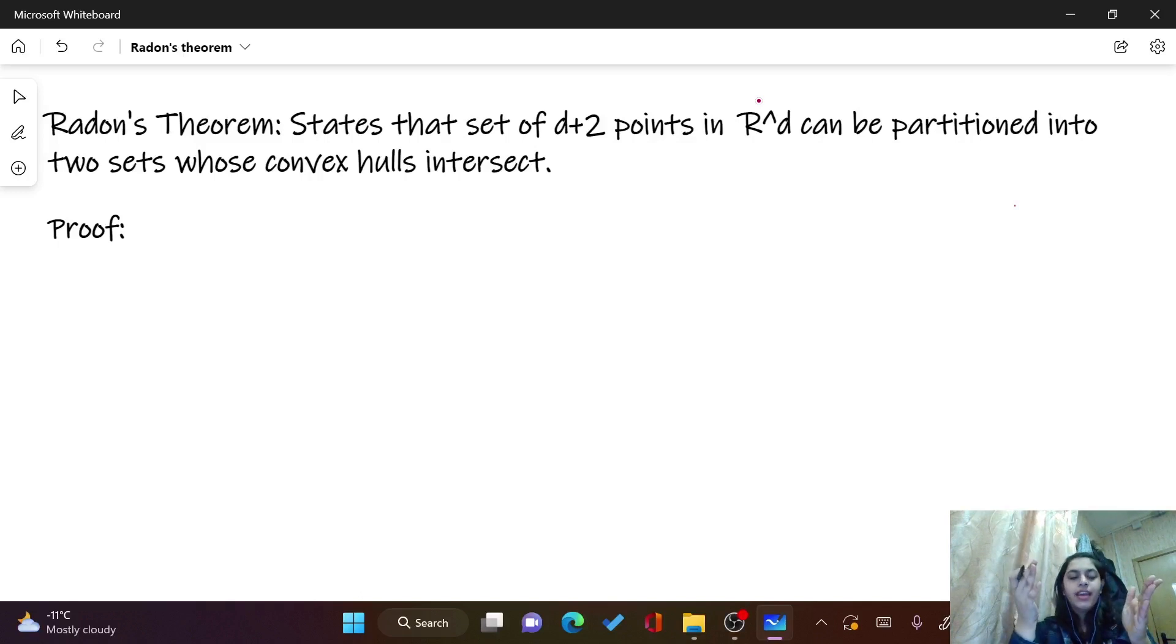Basically we have been given d+2 points and such that these points can be partitioned into two sets, and when we calculate or draw the convex hull of these two sets we'll get a point which belongs to both of them.